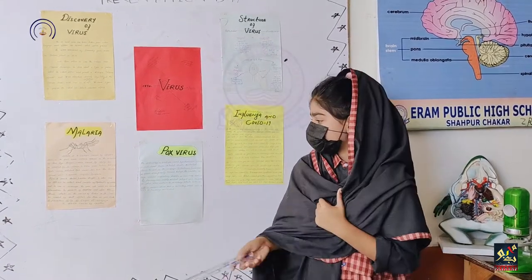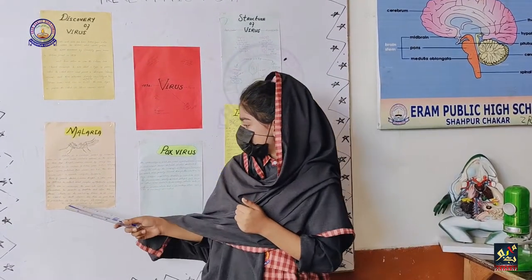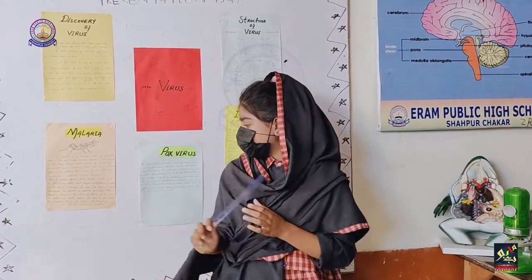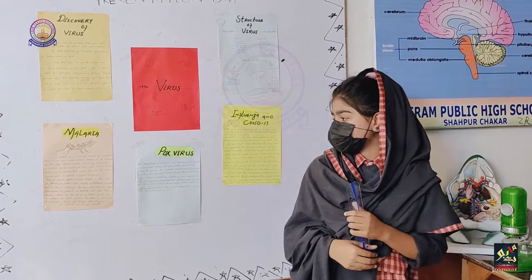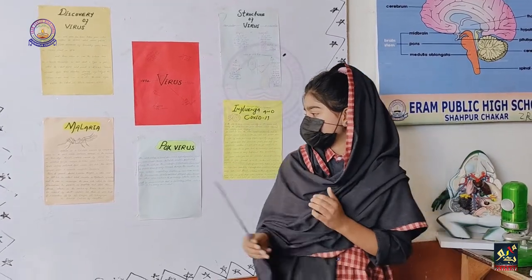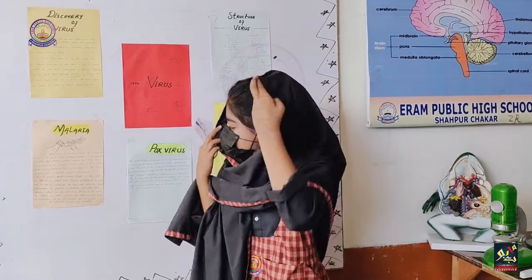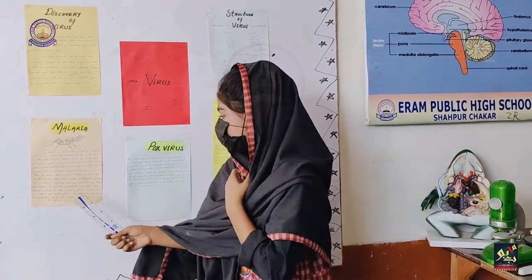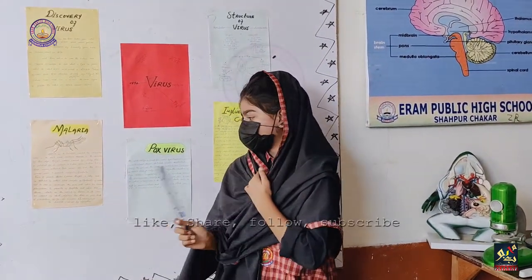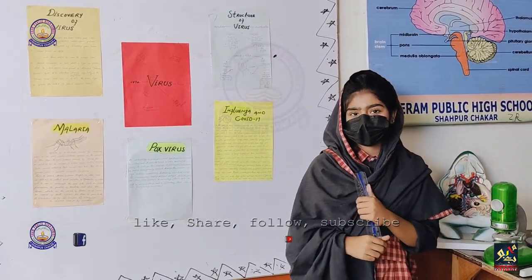When malaria attacks the nucleus of the brain, it can cause death. There are three to four kinds of malaria-related diseases: plasmodium, BYX, dengue, and chikungunya. These diseases are all caused by mosquitoes.